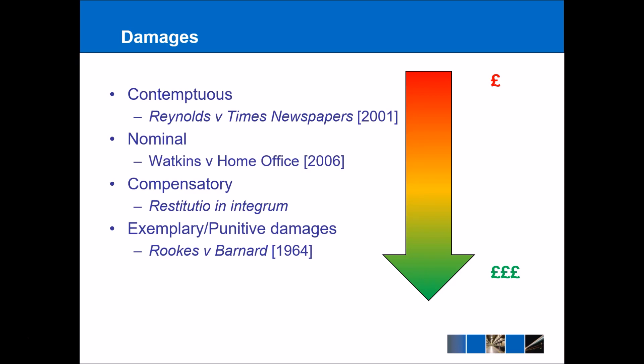The highest type of damages that can be awarded are exemplary or punitive damages, where the courts are not only wanting to award compensation to the claimant but also wanting to punish the defendant. However, the awarding of exemplary or punitive damages is limited to a very slim number of examples, as listed in Rookes v Barnard 1964. These are: where a public officer such as a civil servant or the police has acted in an unconstitutional or completely wrong manner; secondly, where the defendant has acted in such a way to make a profit; and thirdly, where exemplary or punitive damages can be awarded under statute law.